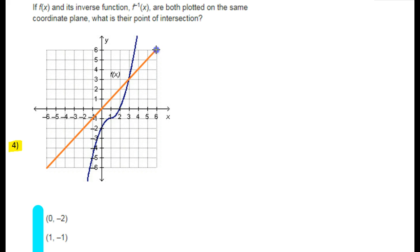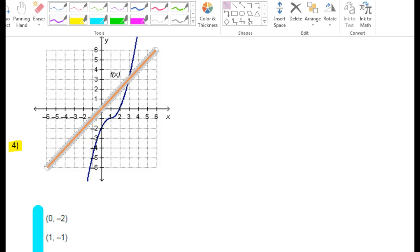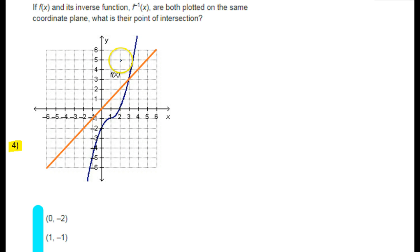y equals x. This orange line that I'm drawing is the line y equals x, so f inverse is going to be a reflection over this line. And when you have a point that touches the reflection line, like this point right here, that point doesn't move for the reflection.